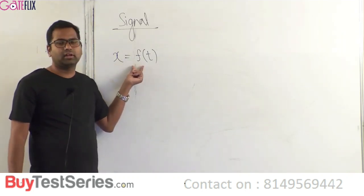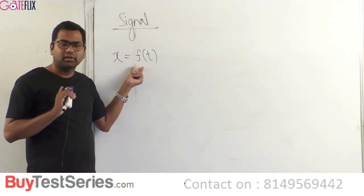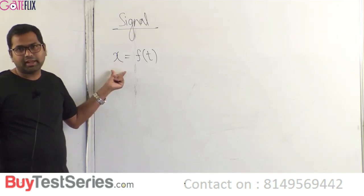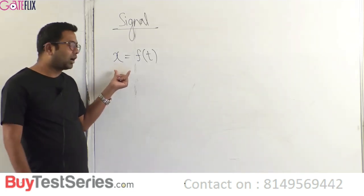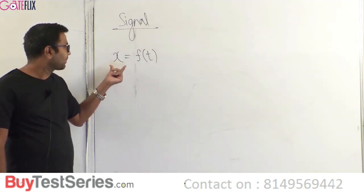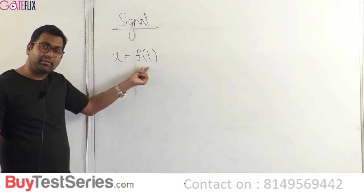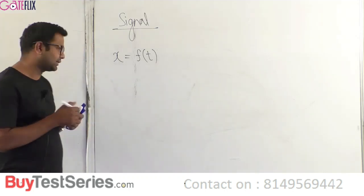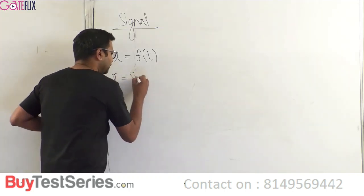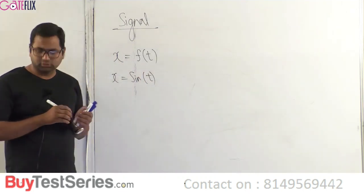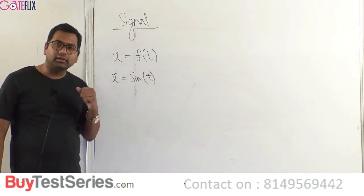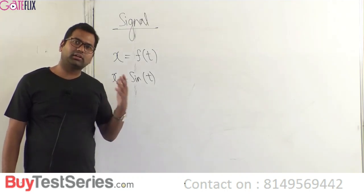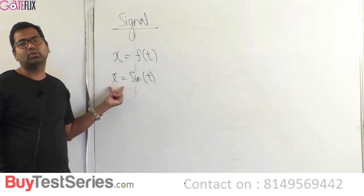The relation f should be well defined — f cannot be random. If f is random, then x cannot be called a signal; x will be called noise. Therefore, x is a signal and t is time, and both should be related by a function f which is well defined in nature. As an example, x = sin(t): sine is well defined and not random, so this x can be called a signal.